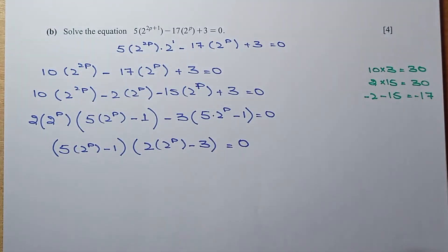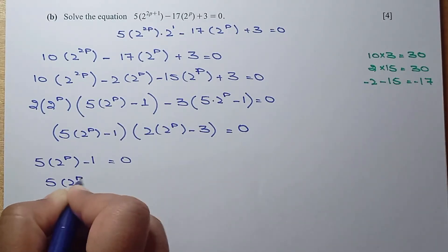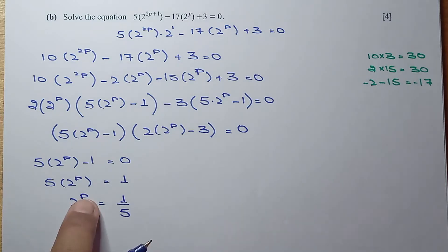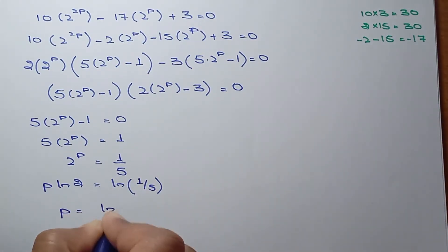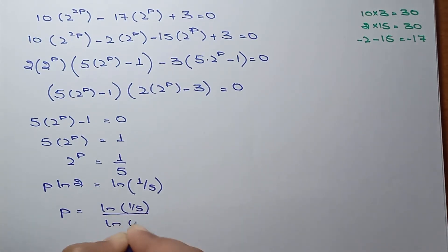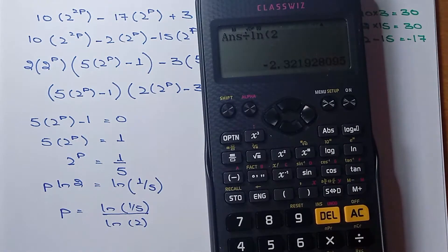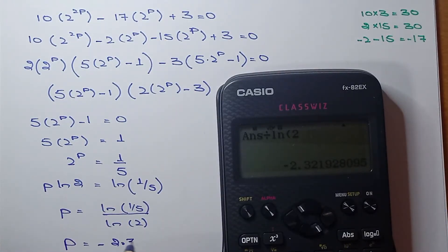Setting each factor to zero: first, 5 times 2 to the P minus 1 equals 0, so 2 to the P equals 1/5. Taking ln on both sides: P ln 2 equals ln(1/5), so P equals ln(1/5) divided by ln 2, which gives approximately minus 2.322 to 3 decimal places.